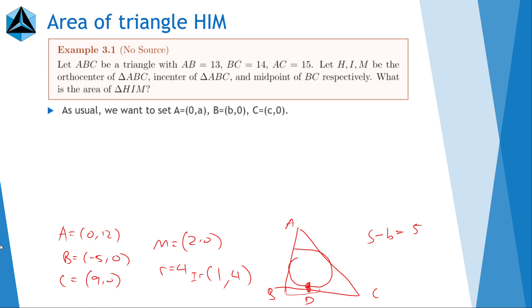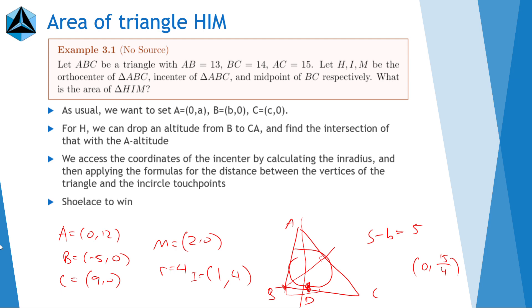Okay, so now for the orthocenter, we can drop the altitude from B to CA and then find the intersection of that with the A altitude. So it's pretty straightforward to calculate the equation of this altitude right here because it passes through point B and is perpendicular to line AC. And then you can use that to calculate that the orthocenter is 0 comma 15 over 4. By intersecting that with the line X equals 0.